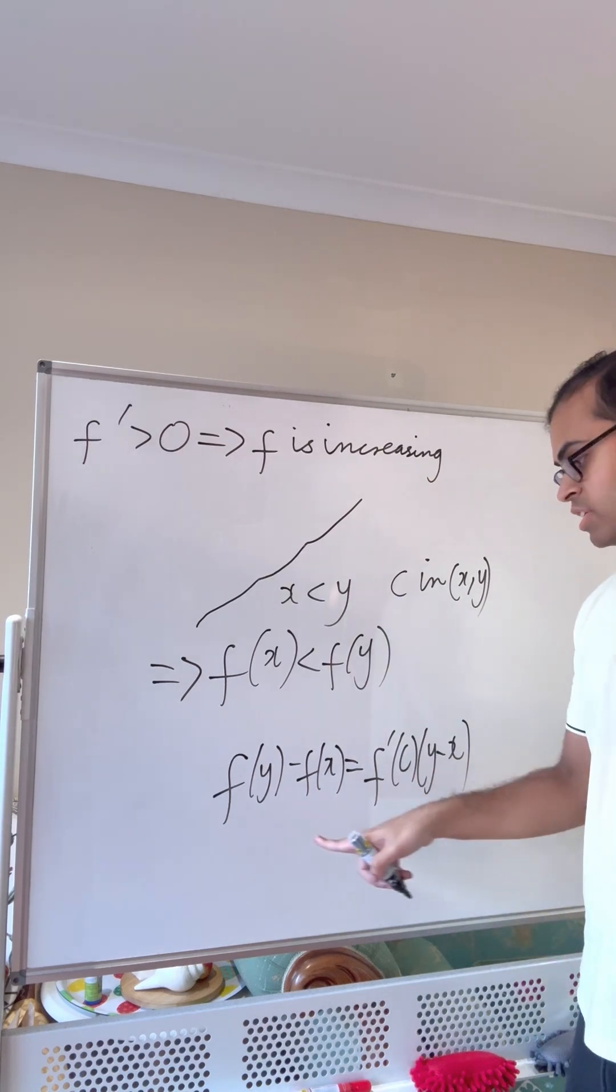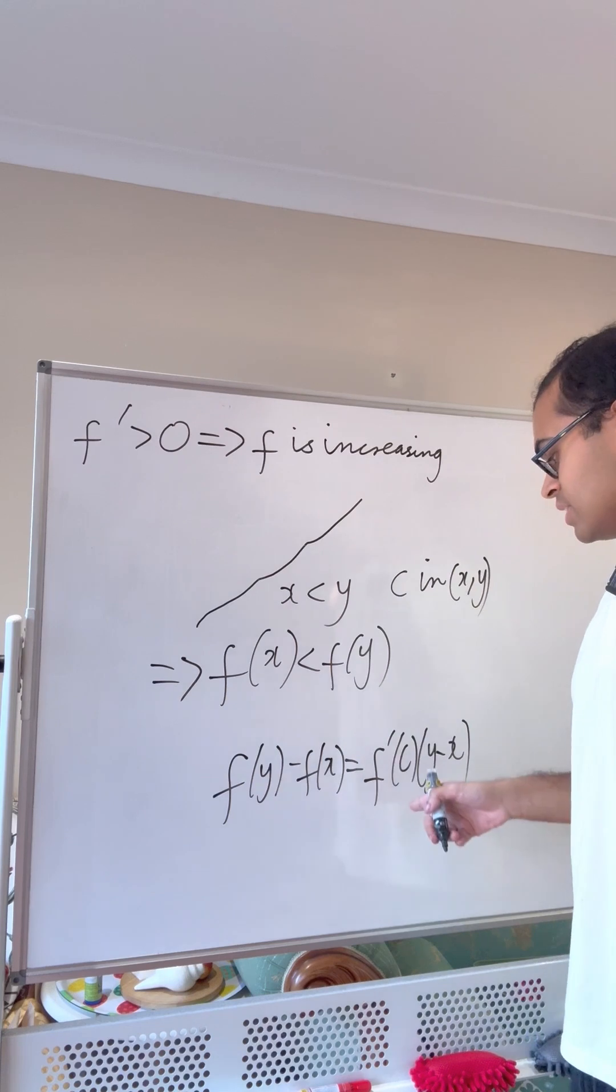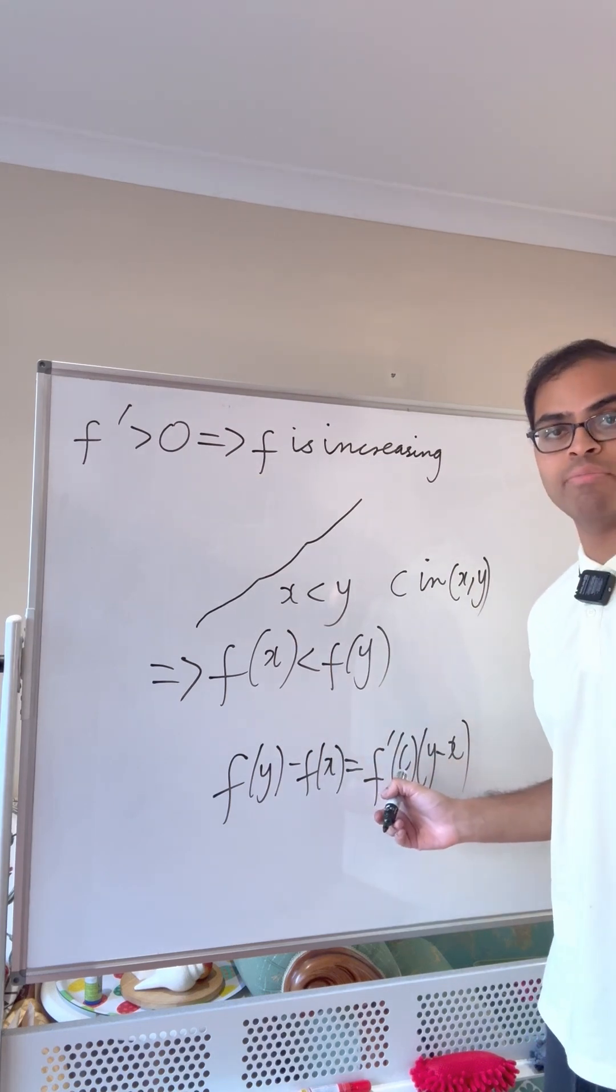That is the mean value theorem: the average speed, which is f of y minus f of x by y minus x, the average velocity in the interval, is equal to the instantaneous velocity at some point in the interval.